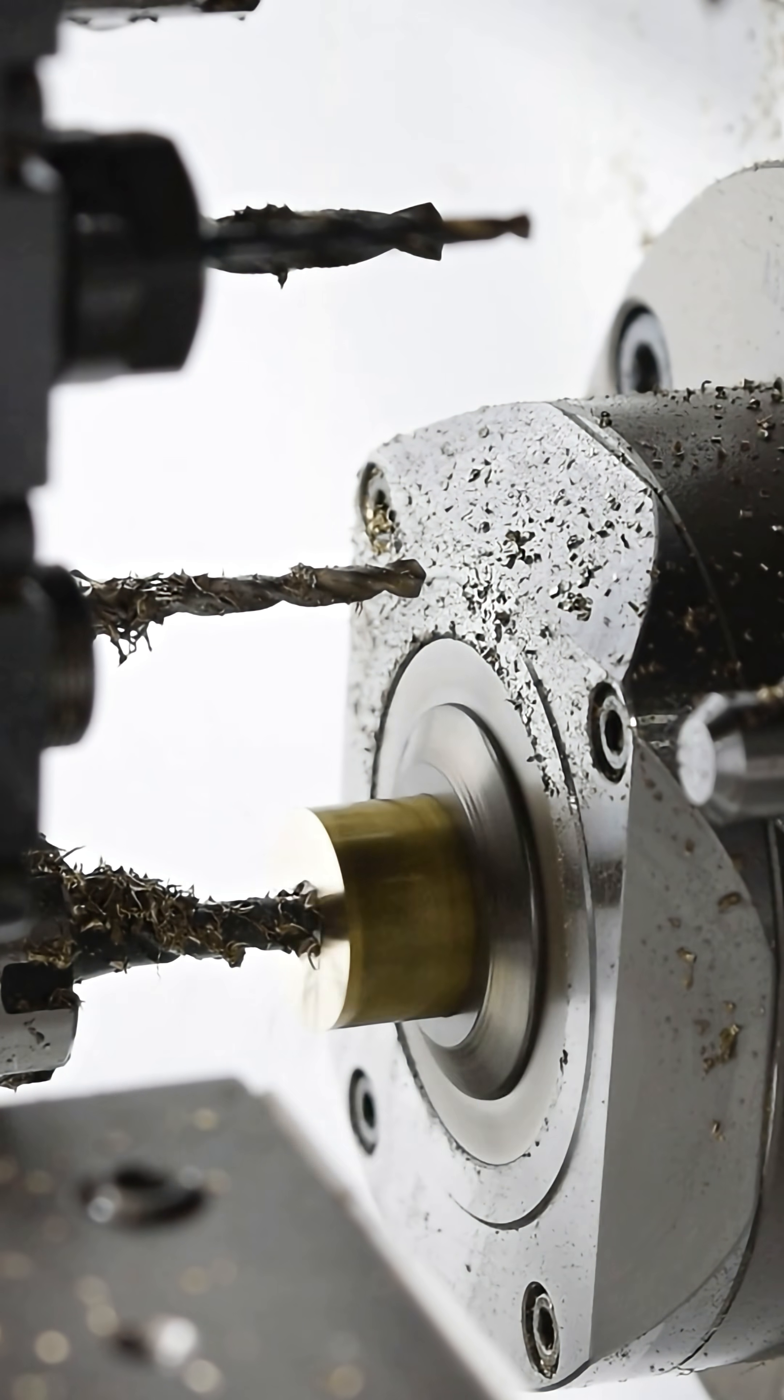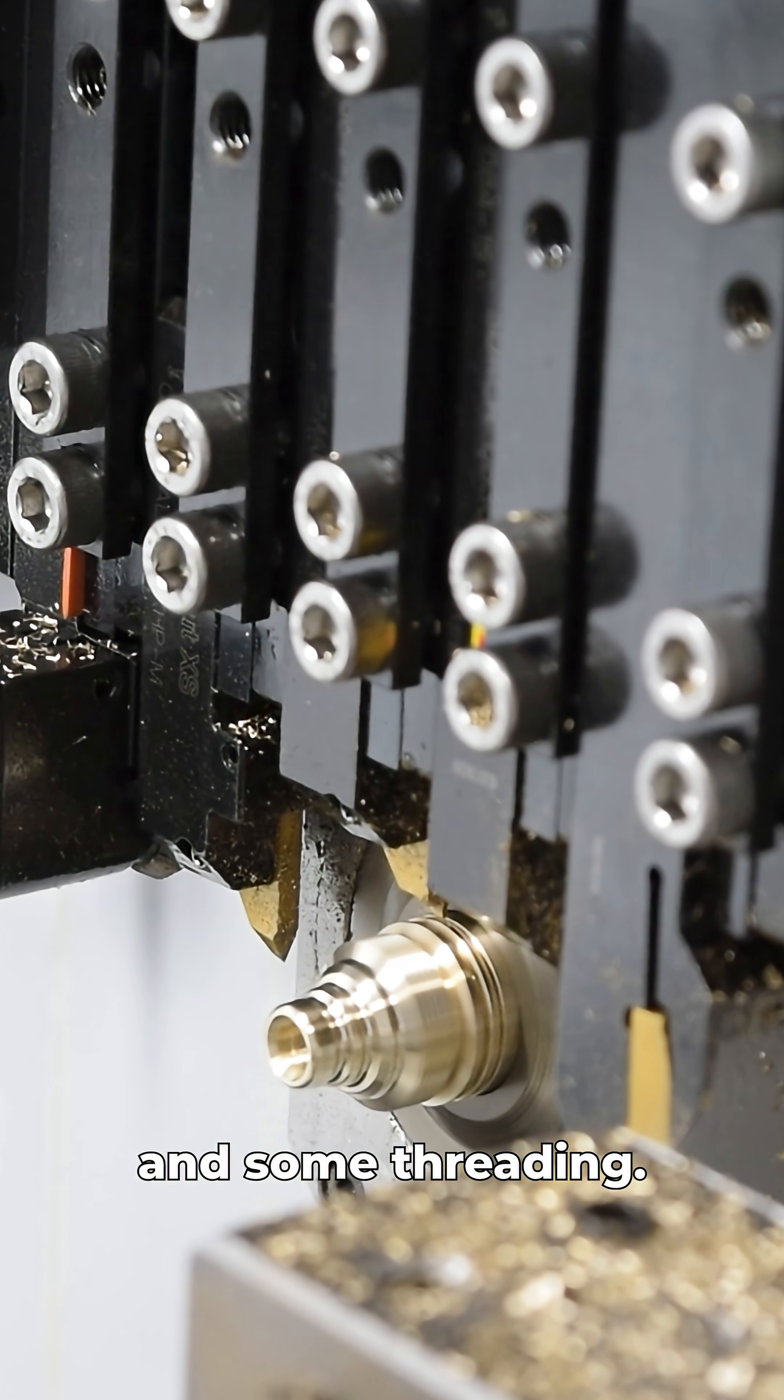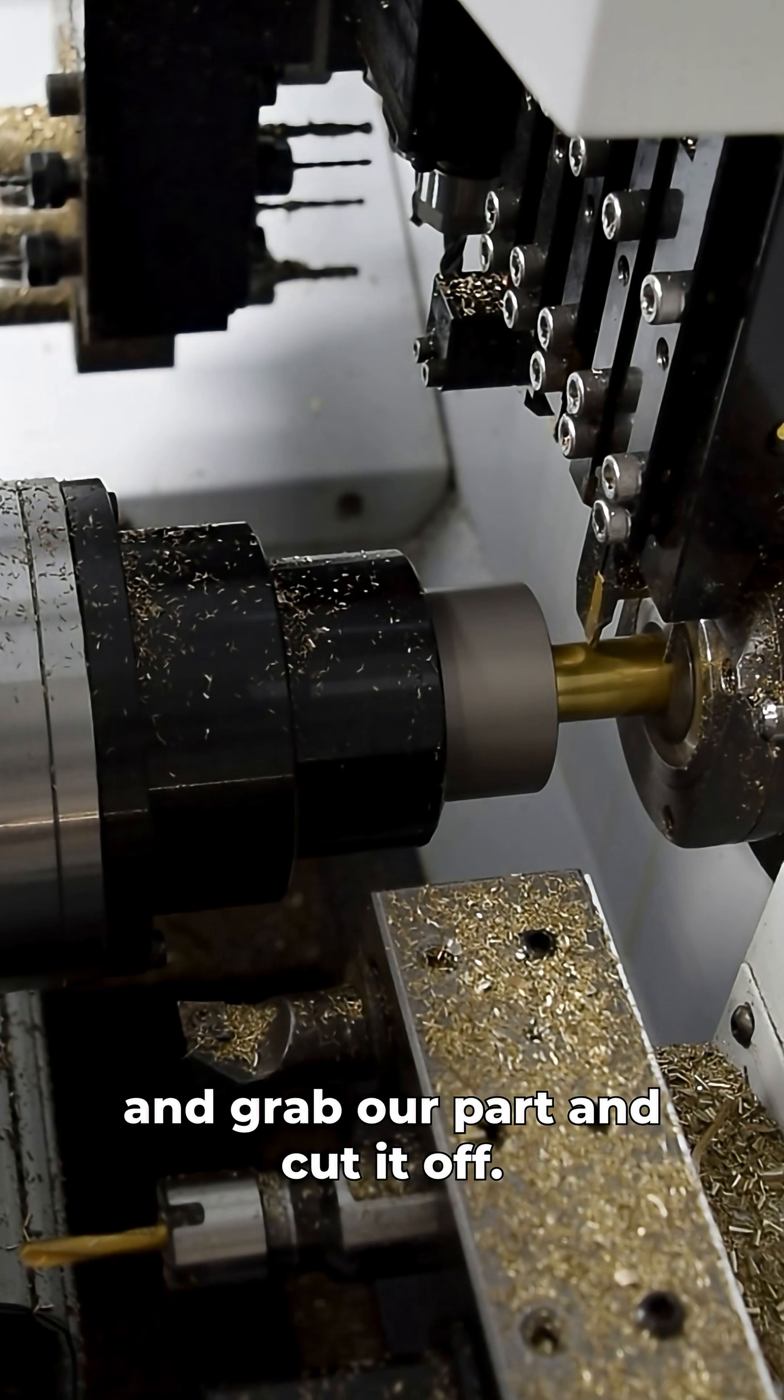We're going to start off with some basic operations on our main spindle: some drilling, some tapping, some grooving, and some threading. At this point we're going to come up with our sub collet and grab our part and cut it off.